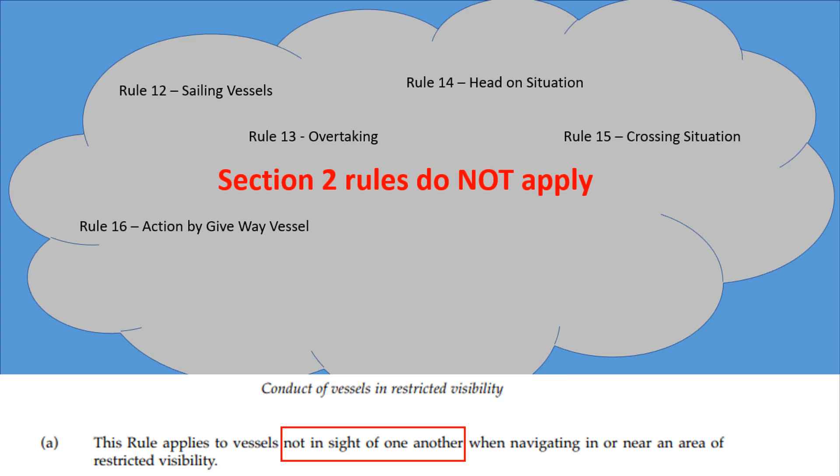Rule 16 Action by Give-Way Vessel and Rule 17 Action by Stand-On Vessel don't apply in restricted visibility because everybody is give way. There's no such thing as a stand-on give way situation. And finally Rule 18 Responsibilities between vessels, this hierarchy does not apply either because everybody is a give way vessel. A not under command boat doesn't have priority over restricted ability to maneuver. These situations shouldn't be happening and everybody should be navigating with extreme caution.